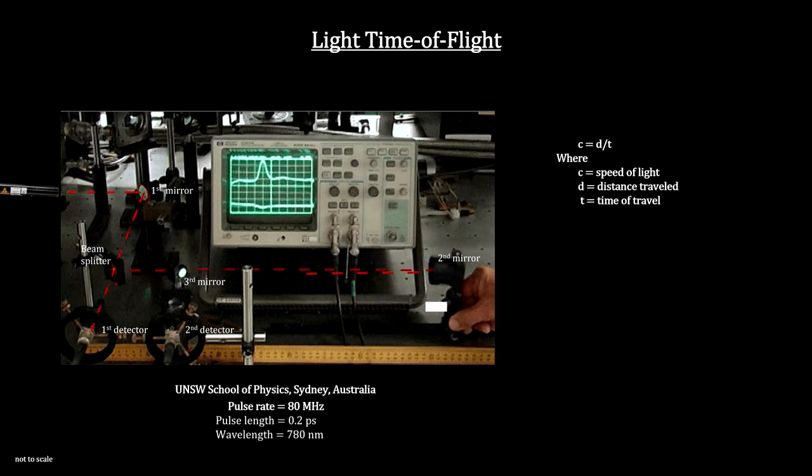Both detectors feed the oscilloscope. An oscilloscope can measure up to hundreds of millions of frames per second. The screen of the oscilloscope shows the signal from the first detector on the top trace and that of the second detector on the lower trace.